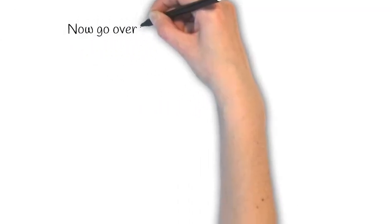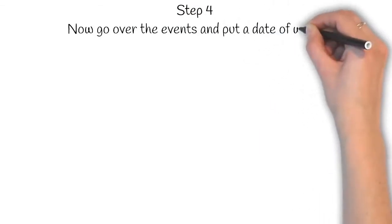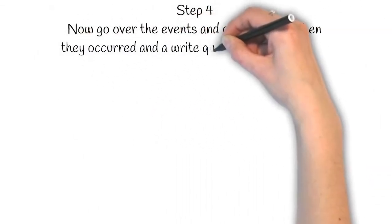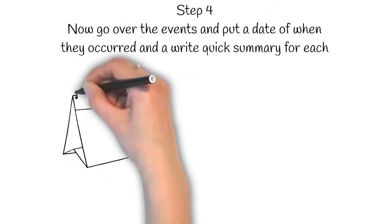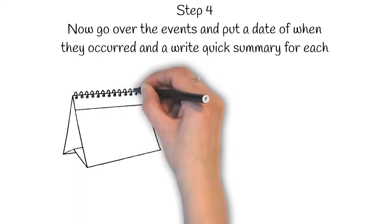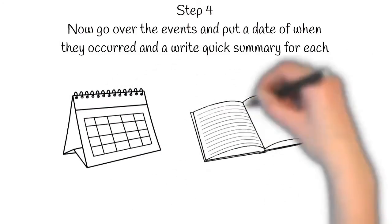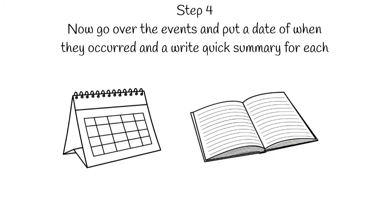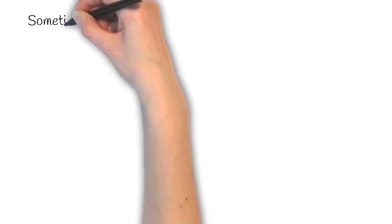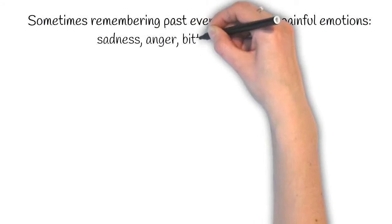Step four, now go over the events and put a date of when they occurred and write a quick summary for each one. If you don't remember dates exactly, then sketch down the age you believe you were. Sometimes remembering past events can bring painful emotions.